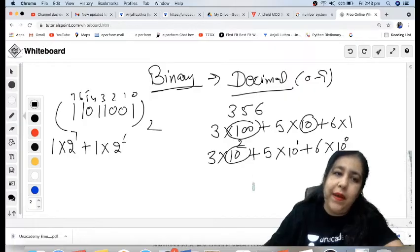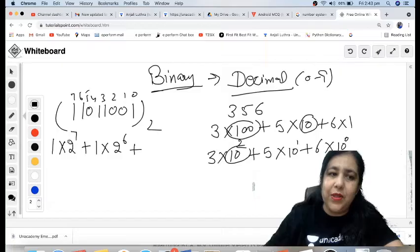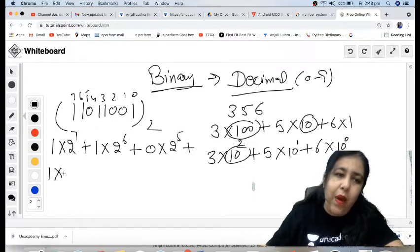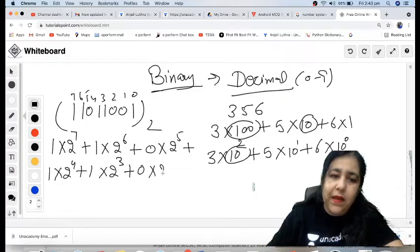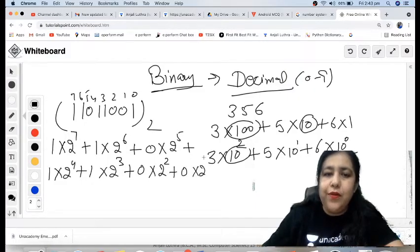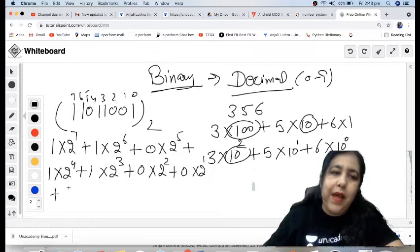So 1 multiplied by 2 raised to the power 7, 1 into 2 raised to the power 6. So face value ke saath multiply karte jayenge. 1 into 2 raised to the power 7, 1 into 2 raised to the power 6. Then 0 into 2 raised to the power 5, plus 1 into 2 raised to the power 4, plus 1 into 2 raised to the power 3, plus 0 into 2 raised to the power 2, plus 0 into 2 raised to the power 1, plus 1 into 2 raised to the power 0.